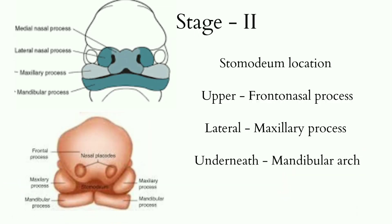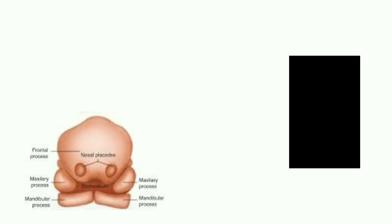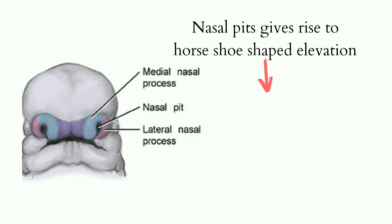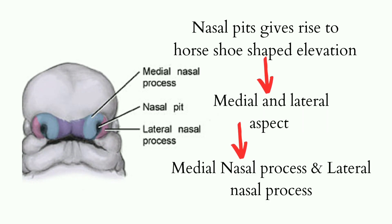In Stage 2, the Stomodium is overlapped superiorly by the frontonasal process, laterally by the maxillary arch, and underneath by the mandibular arch. There is a bilateral localized thickening on the frontonasal process, which gives rise to nasal placodes, which in turn thicken and form nasal pits. These nasal pits give rise to a horseshoe-shaped elevation, which has a medial aspect and lateral aspect — the medial nasal process and lateral nasal process.